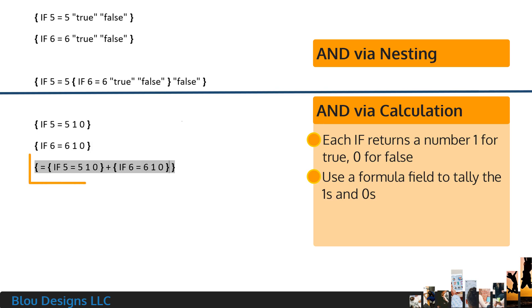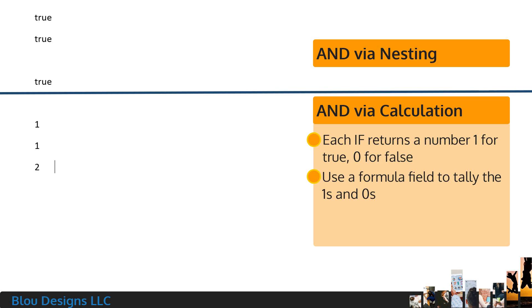So in a new pair of curly braces, I'll start with an equal sign, followed by the 5 equals 5 check, followed by a plus sign, followed by the 6 equals 6 check. If I preview results, so far you can see that individually the checks each return a 1 and added together in the formula, they return a 2.